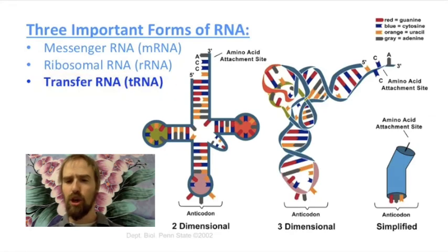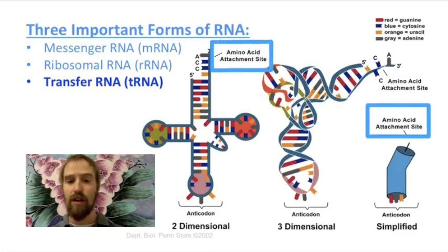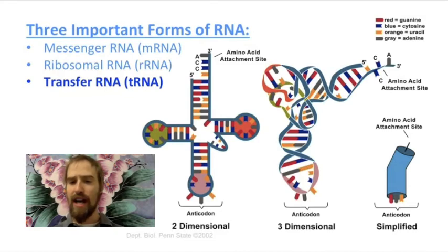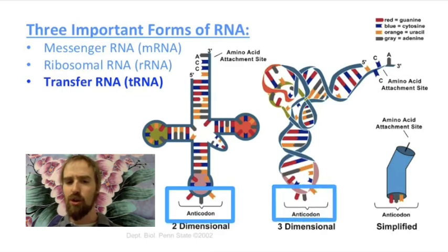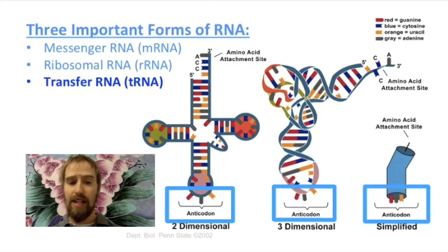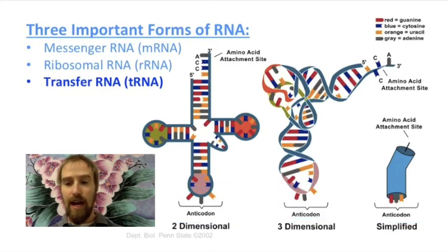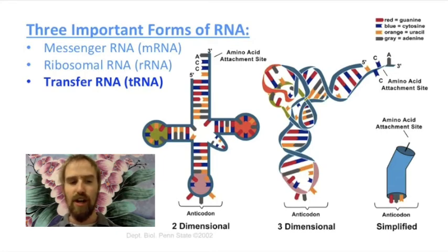The third kind of RNA is called transfer RNA, or tRNA. These are small folded coils of RNA, and they are called transfer RNAs because they carry, or transfer, amino acids that are to be part of the protein molecule being assembled by the cell. Remember how our strand of mRNA had these sets of three bases called a codon? Well, tRNA molecules contain a region called an anticodon, which is also a set of three bases. Anticodons and codons match up according to the rules of base pairing, and this is how tRNAs are able to add amino acids to a protein in the correct order. We'll learn about that process in our next video.